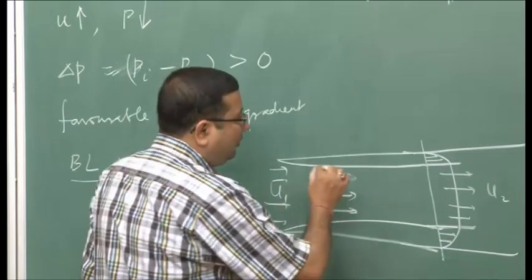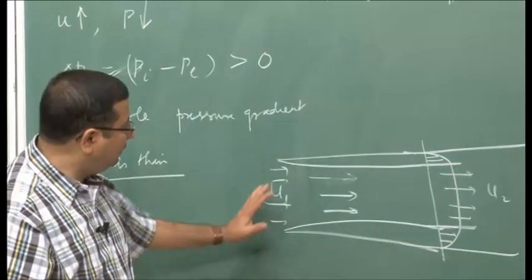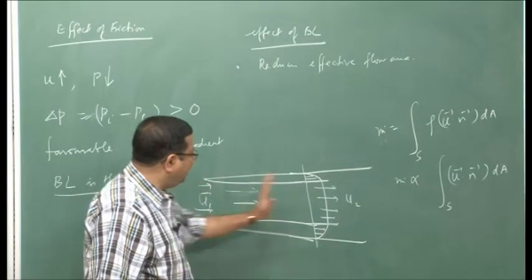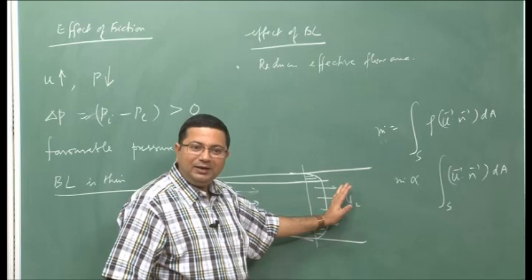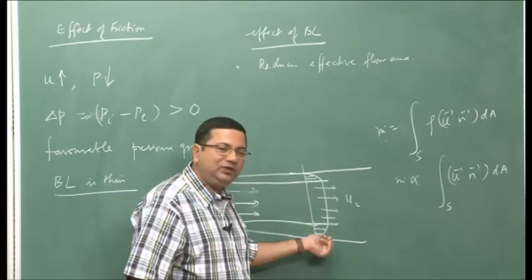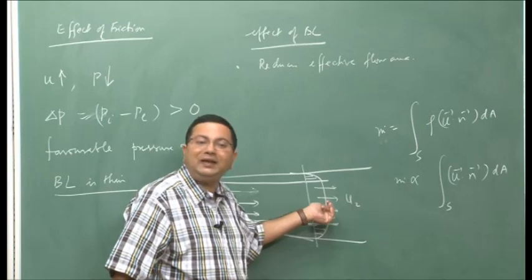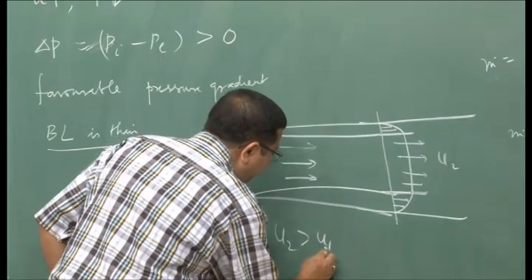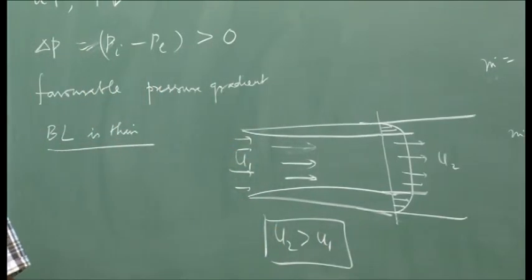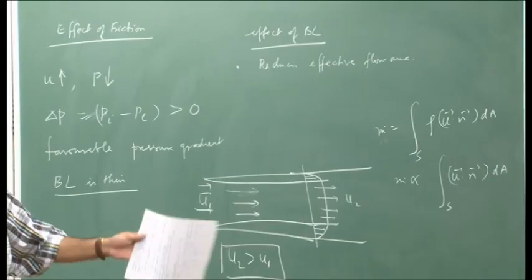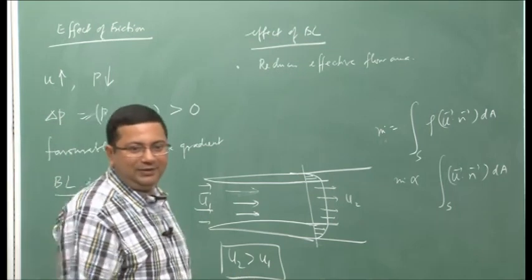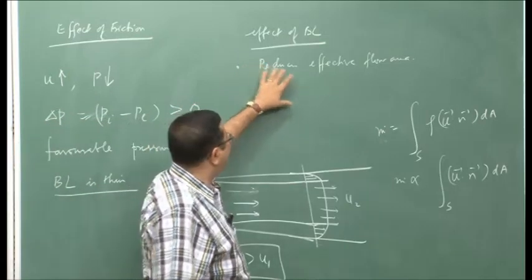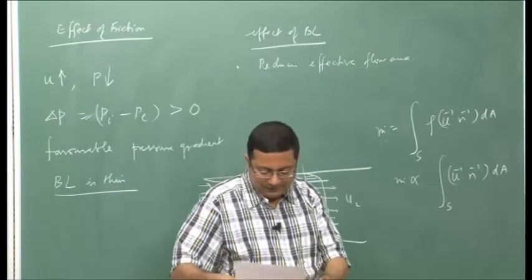From the continuity equation, there is no accumulation of mass, so mass flow rate must remain constant. In order to achieve this, since velocity has slowed near the wall, the core flow must move faster. Therefore, u2 is greater than u1. The boundary layer kind of squeezes the flow and accelerates it. The same thing happens in the nozzle — it reduces the effective flow area and the flow is accelerated. This is called displacement thickness: it seems like effectively the wall is displaced, reducing the actual effective flow area.